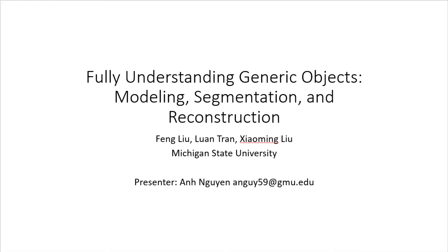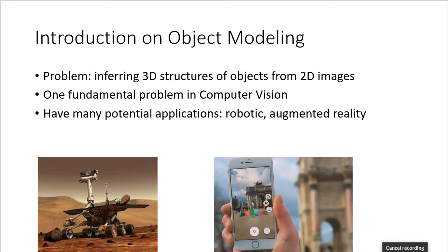The basic idea of this paper is that they want to reconstruct 3D models from one single input image. So let's go into the detail. Object modeling means that we want to infer 3D structures of objects from images, and this is one of the old and fundamental problems in computer vision.